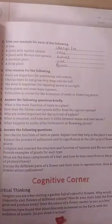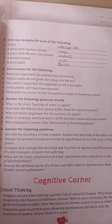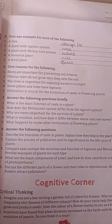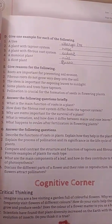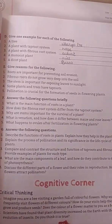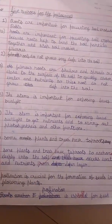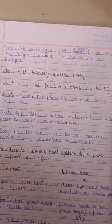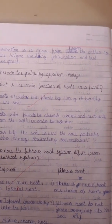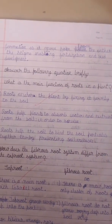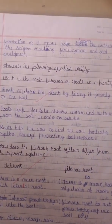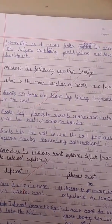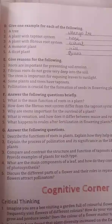Fifth question: pollination is crucial for the formation of seeds in flowering plants. Answer: pollination is essential for seed formation as it moves pollen from the anther to the stigma, enabling fertilization and seed development.